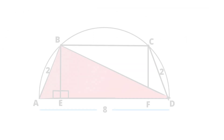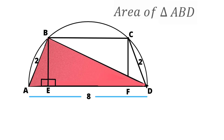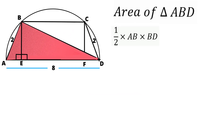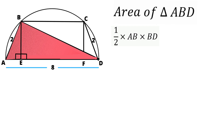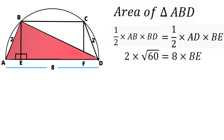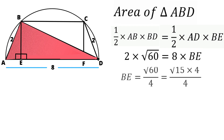The area of triangle ABD can be expressed in two ways: half × base AB × height BD, or half × base AD × height BE. Cancelling half from both sides: AB × BD = AD × BE, so 2 × √60 = 8 × BE. Therefore, BE = √60 ÷ 4 = √15 / 2.